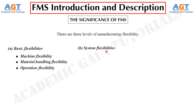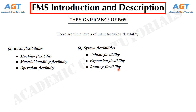Number 2 – System flexibilities. This level of flexibility includes volume flexibility, which is a measure of a system's capability to be operated profitably at different volumes of the existing part types; expansion flexibility, which is the ability to build a system and expand it incrementally; routing flexibility, which is a measure of the alternative paths that a part can effectively follow through a system for a given process plan; process flexibility, which is a measure of the volume of the set of part types that a system can produce without incurring any setup; and product flexibility, which is the volume of the set of part types that can be manufactured in a system with minor setup.